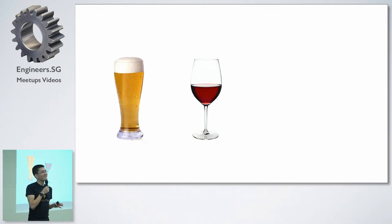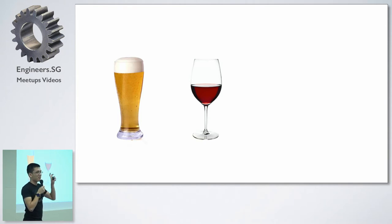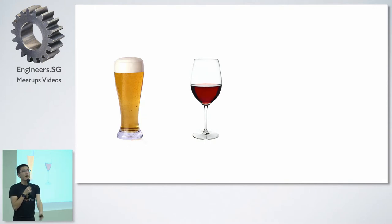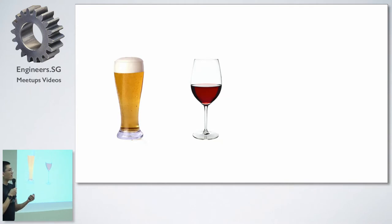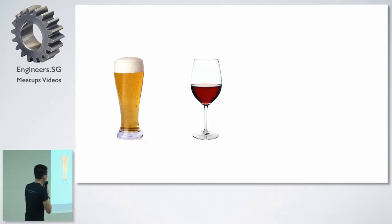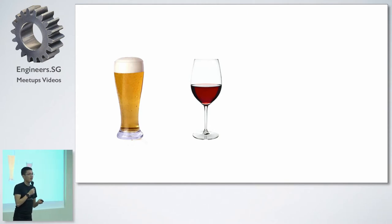To talk through our seven steps, we'll use an analogy — a hypothetical problem. Let's say your employer or a friend came to you and said they want to build a system, just for fun maybe, to tell the difference between beer and wine.